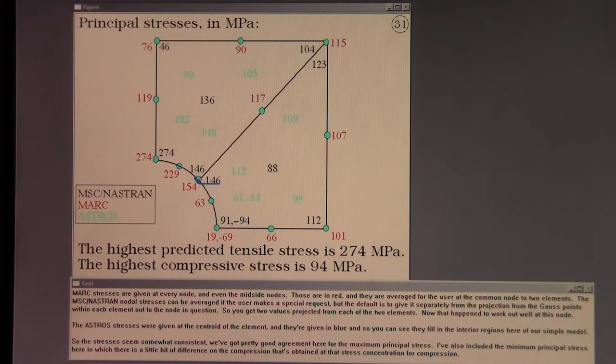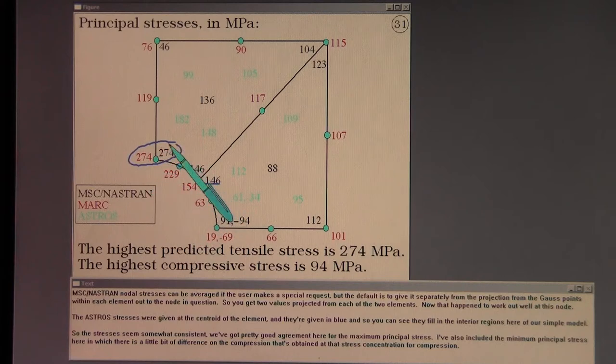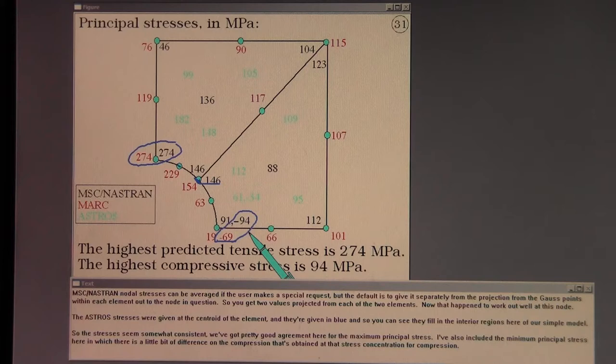The ASTROS stresses were given at the centroid of the element and they are given in blue so you can see they fill in the interior regions here of our simple model. So the stresses seem somewhat consistent. We've got pretty good agreement here for the maximum principal stress. I've also included the minimum principal stress here in which there is a little bit of difference on the compression that's obtained at that stress concentration for compression.